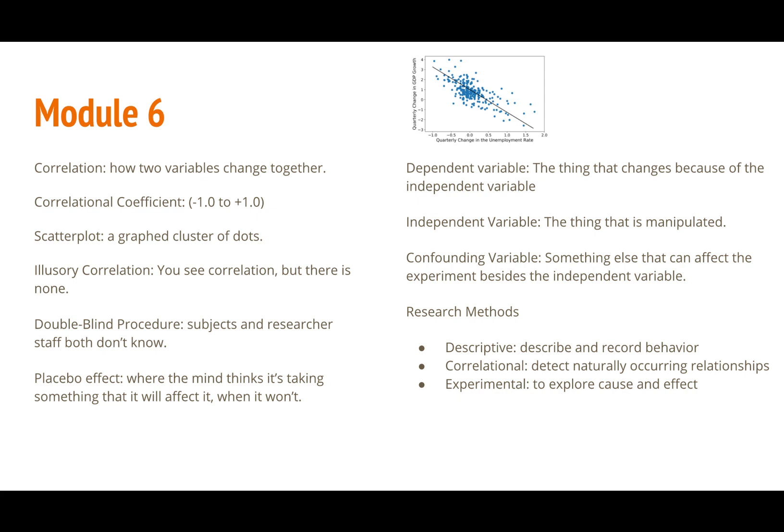One thing you have to worry about when you're taking in data is that there can be confounding variables or something that could impact the dependent variable besides the independent variable in your experiment.